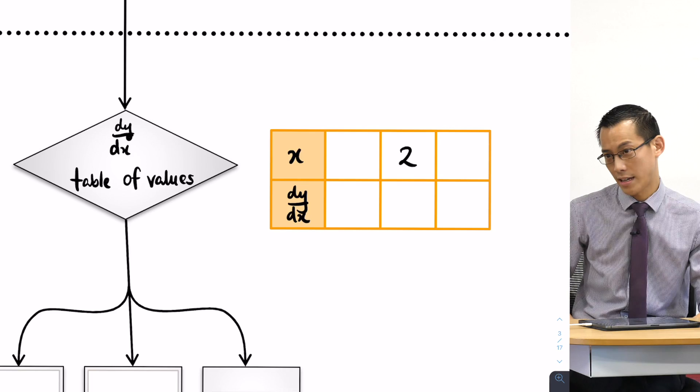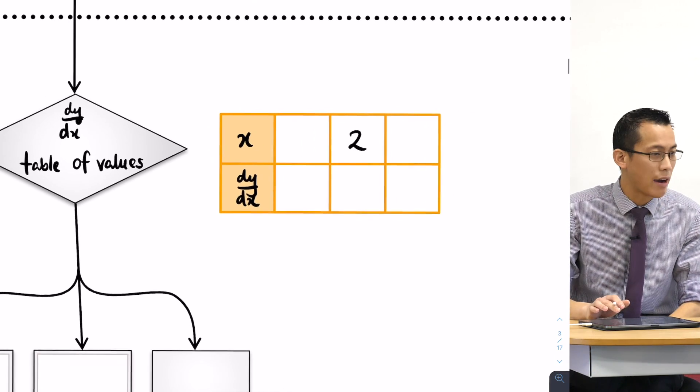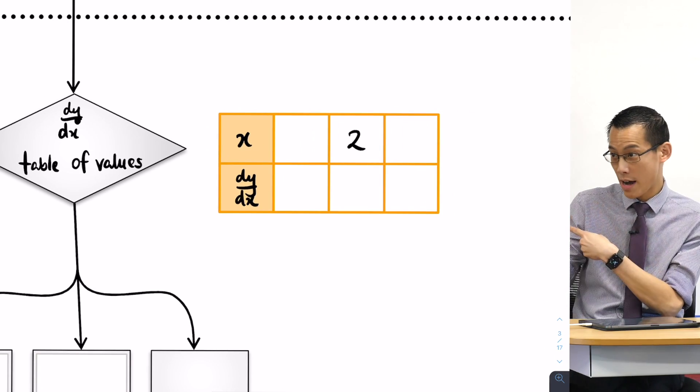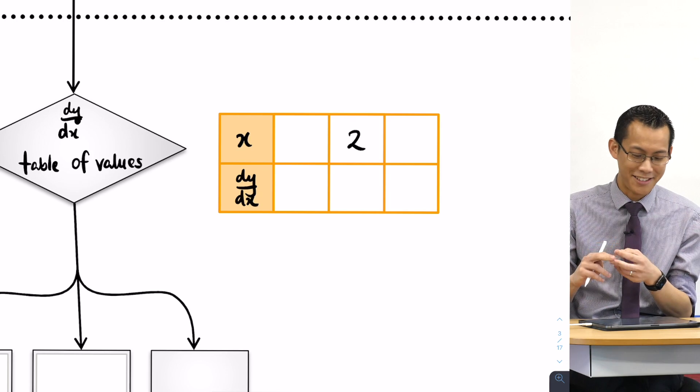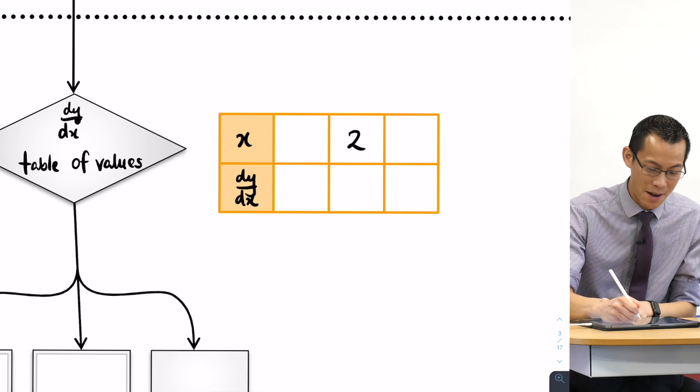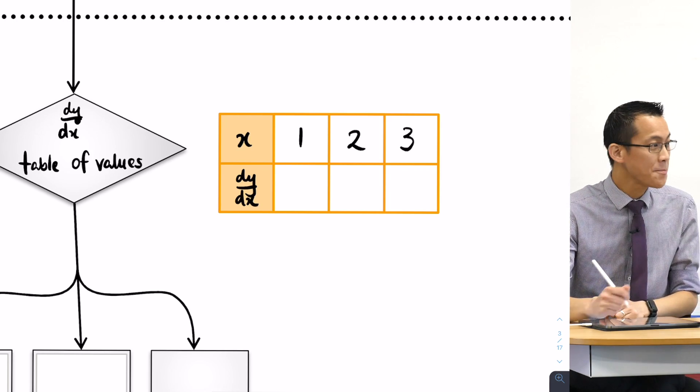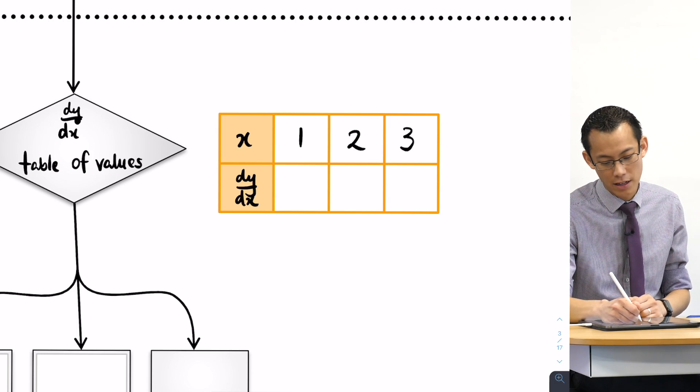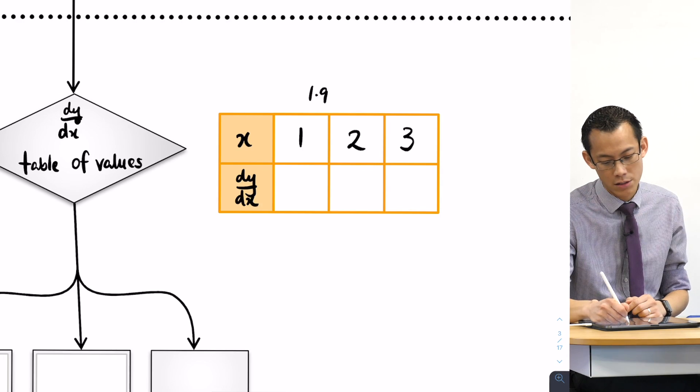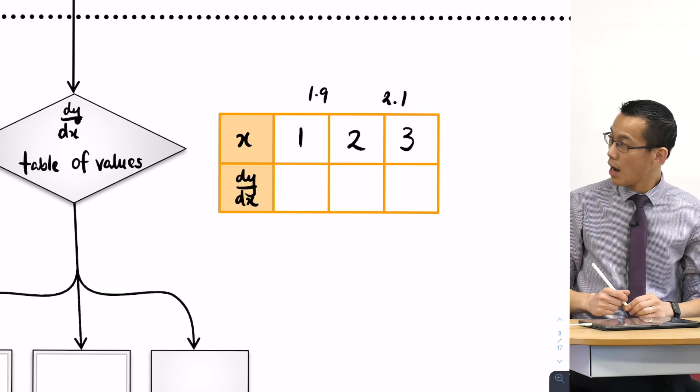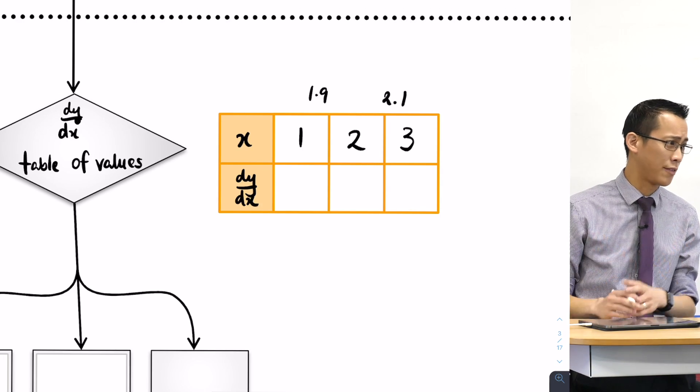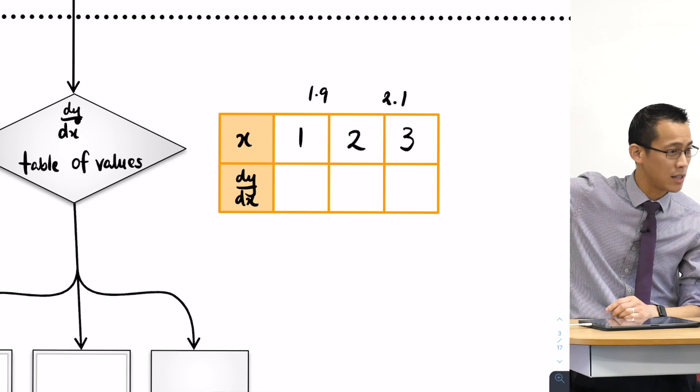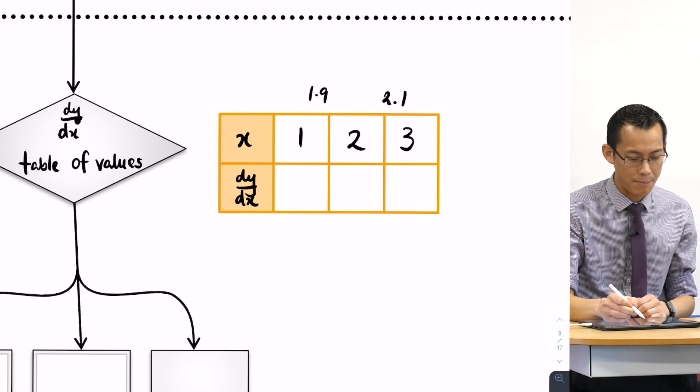Okay, now you need to select some values and you generally try and pick ones that number one are nearby and number two are relatively easy to evaluate. Okay, so I'm just going to pick one and three, but depending on the function, you might need to - and we talked about this before - you might need to get closer. You might need to pick numbers like 1.9 and 2.1. Okay, we'll go into more detail as you get more complicated functions as to why you would pick these values, but for now I'm pretty happy with the ones that we've got.